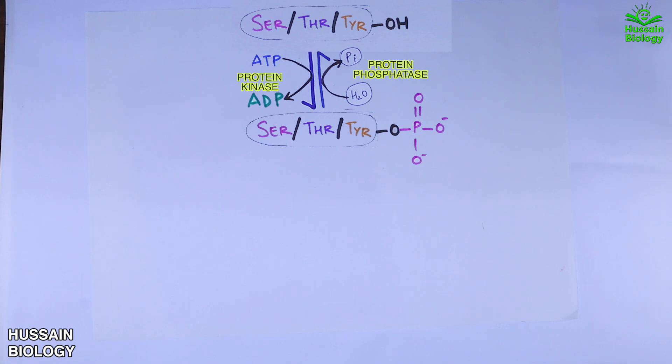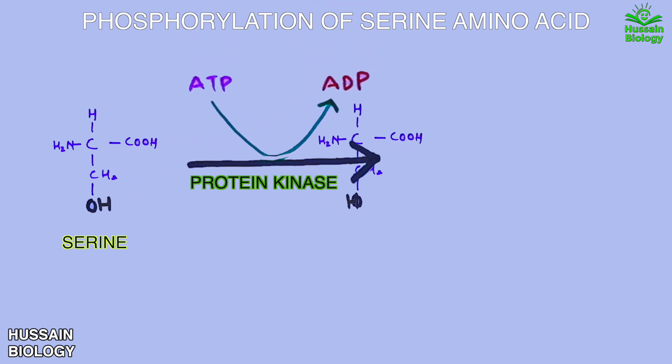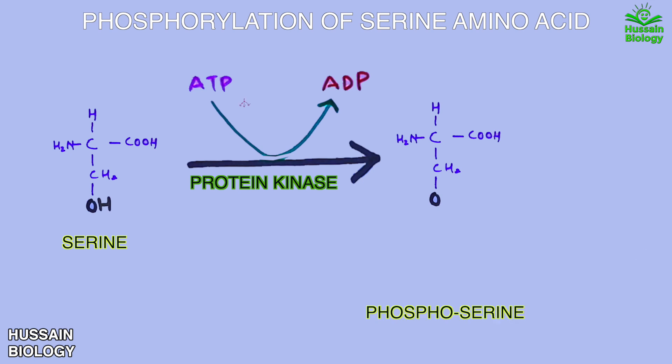Now let's see these reactions in detail, taking serine as an example. Here in this diagram we have the serine molecule having a hydroxyl group OH. Protein kinase mediates the reaction in the presence of the ATP molecule, which provides the phosphate group. In this reaction, first a proton leaves off the amino acid, and then the phosphate group attaches with the remaining oxygen atom of the amino acid, as shown in the animation, thus completing the phosphorylation reaction. The in-depth mechanism for this reaction will be discussed in the next part of the video.